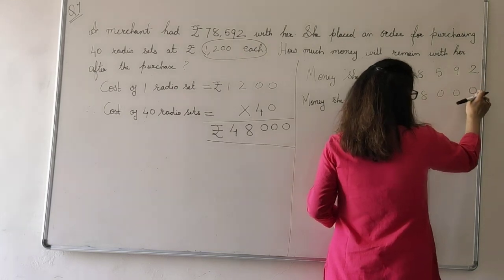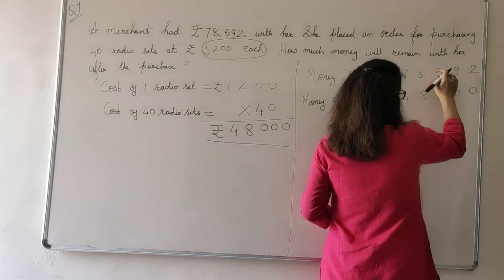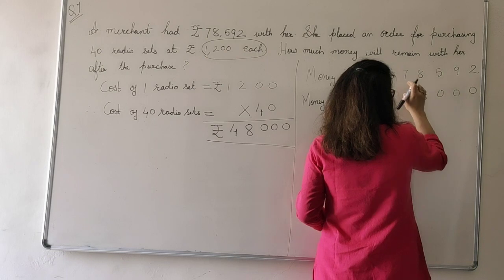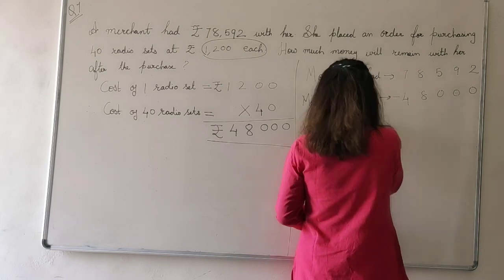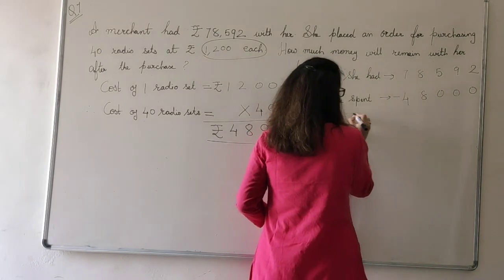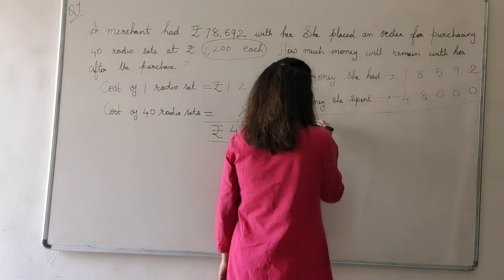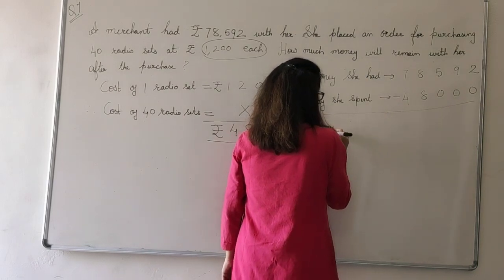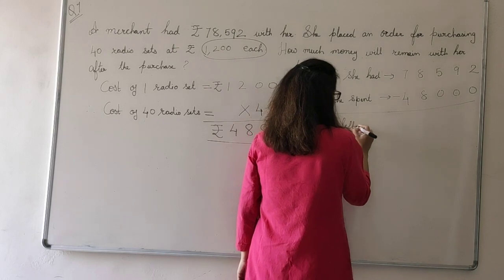Ones will come under ones. Tens under tens. Hundred under hundred. Thousand under thousand. Ten thousand under ten thousand. So, money left. Money left. How much she is left? We will subtract.